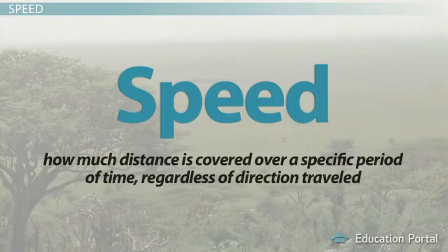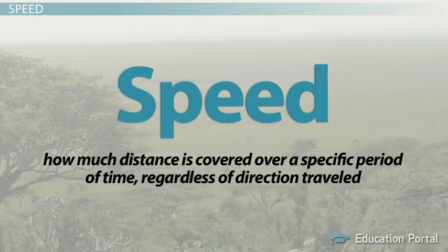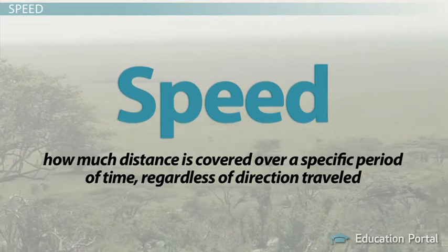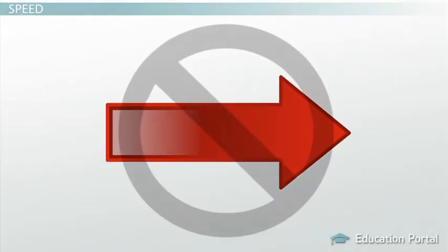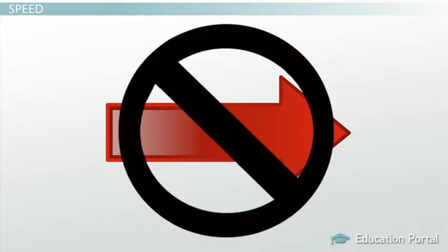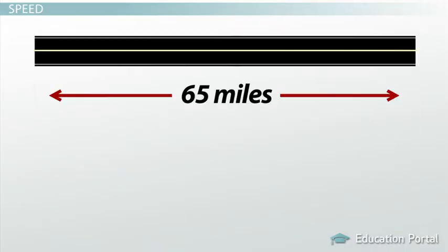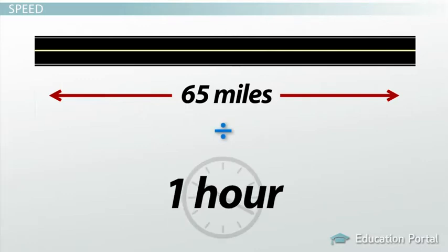To put an official definition on it, speed is how much distance is covered over a specific period of time, regardless of direction traveled. Since there is no directional component, speed must be a scalar quantity. In physics, you can calculate average speed by taking the total distance traveled and dividing it by the total time required to travel that distance.